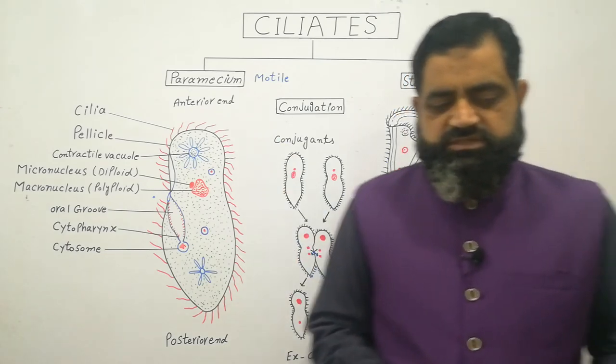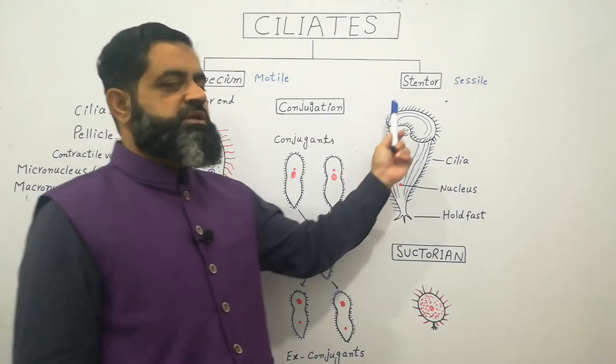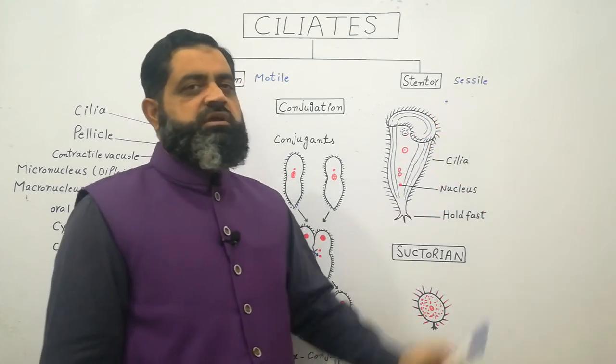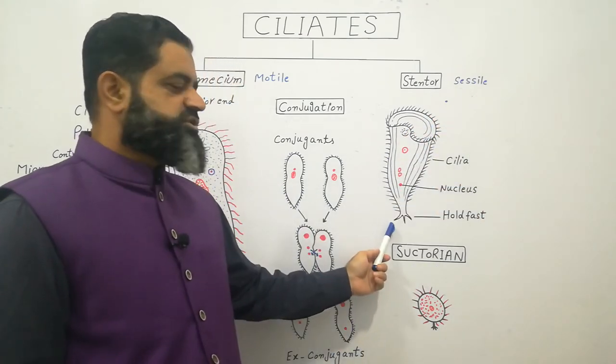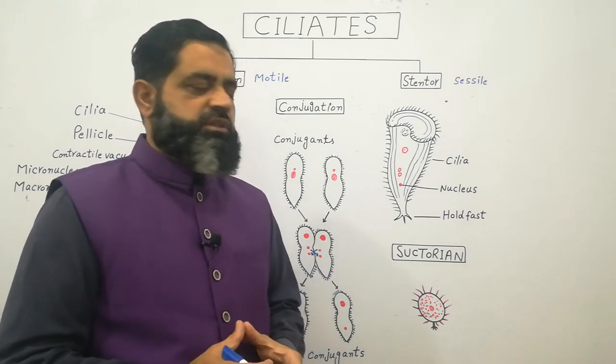Now let's discuss some sessile paramecium or sessile ciliates. The best example is stentor which is sessile. It always lives attached with some substratum, with a rock or any substrate on the surface in the water.